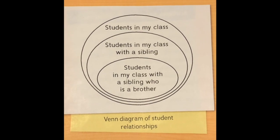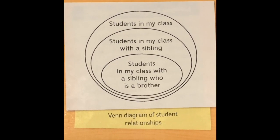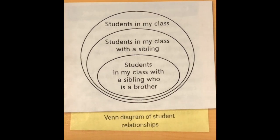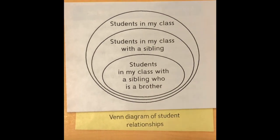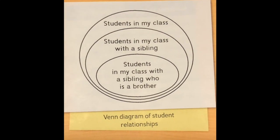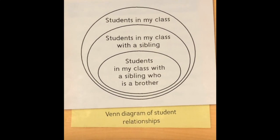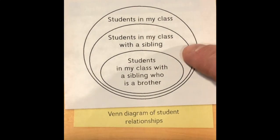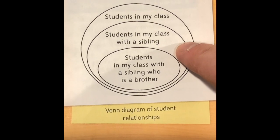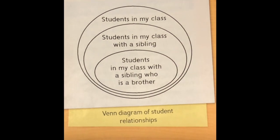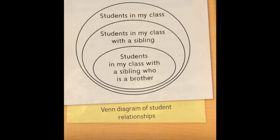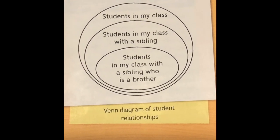The most general group goes at the top of a hierarchy, and the groups get more specific as you move down. So in this example, we have students in my class, which is the most common. Then we could have a subcategory of students in my class with a sibling, and then students in my class with a sibling who is a brother.